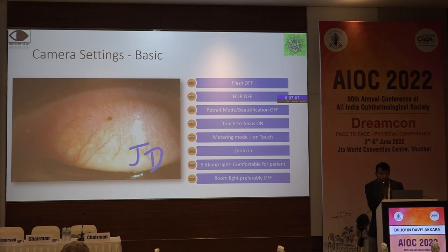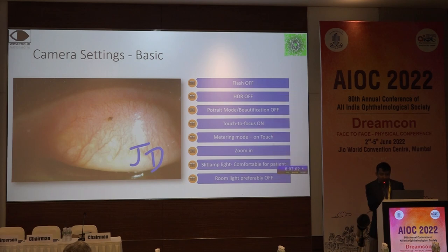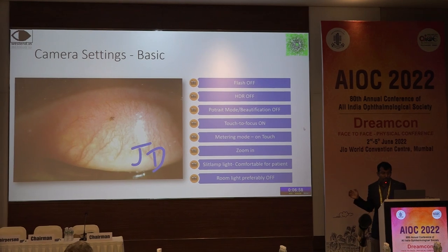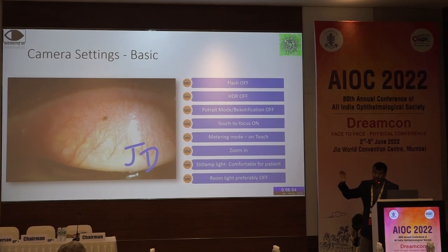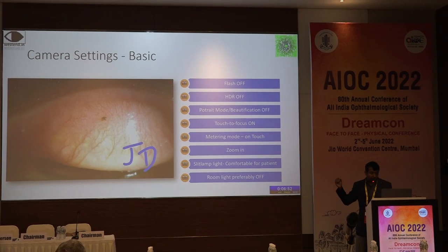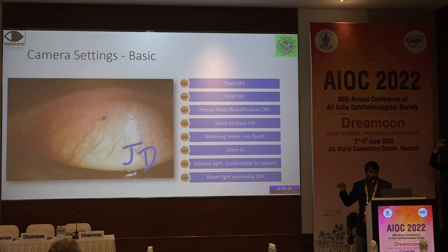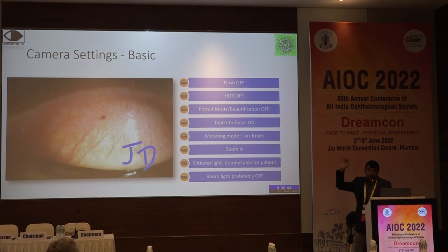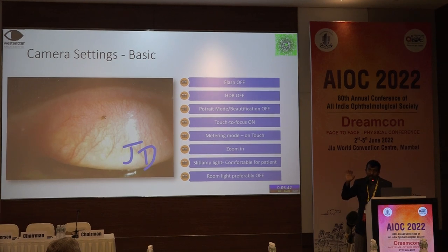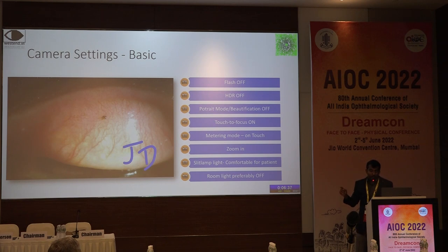Flash off, HDR off, portrait mode, beautification mode, AI mode — all those off. Keep it in touch-to-focus mode. For metering mode, keep it on touch and do a little zoom in so that the outer circle is not seen. You can crop it out later, but zoom in if you want to take direct good photographs. Change the illumination to make it comfortable. Room light — if you turn it off, the glare from the slit lamp eyepieces goes away. So turn off the room light, especially behind you if you can.